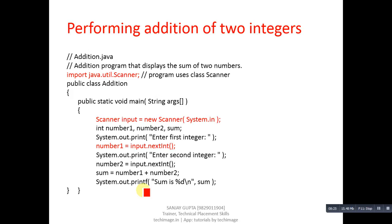You can write this code in any text editor like Notepad or Notepad++, then save it as addition.java. Open the command prompt and write 'javac addition.java'. After compilation the bytecode will be produced, then run it with the 'java' command. This is a simple program that reads values from the console and displays output to the console.